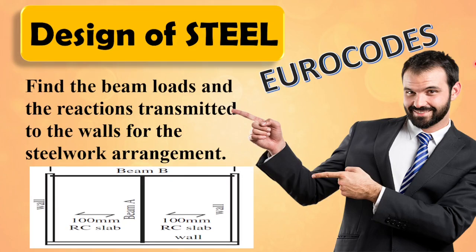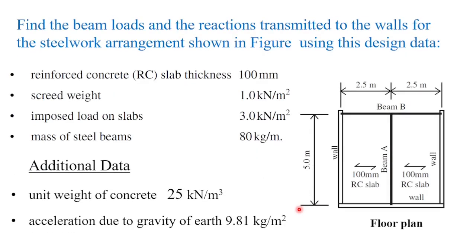In this video, I am going to show you how to calculate reactions transmitted to the walls for a steel work arrangement. The problem says: find the beam loads and the reactions transmitted to the walls for the steel work arrangement shown in the figure. We will use the given design data: reinforced concrete slab thickness, imposed load on slabs, mass of steel beams, unit weight of concrete, and acceleration due to gravity.